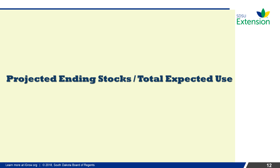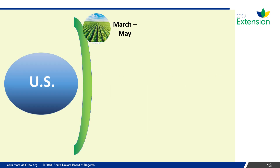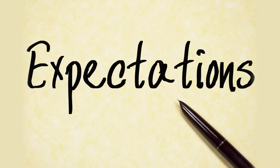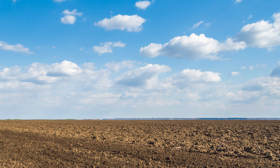Market participants focus on factors with the greatest uncertainty during the marketing year. During March through May in the U.S., market participants focus on developing expectations of the number of acres that will be planted to the various crops.